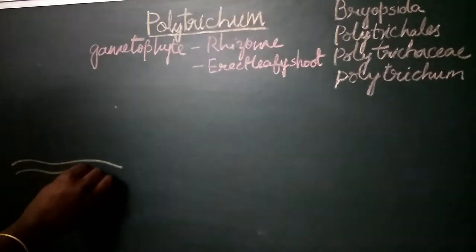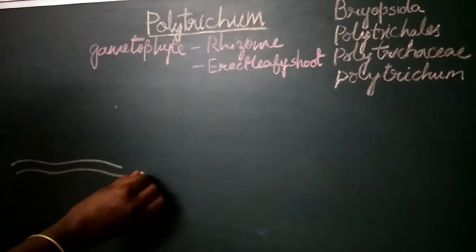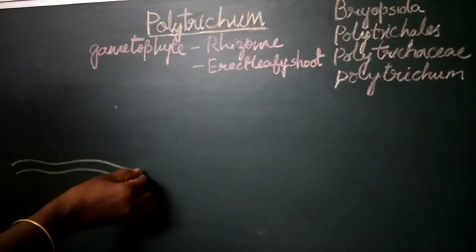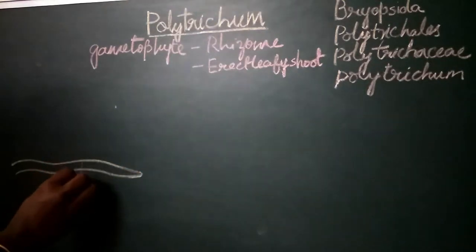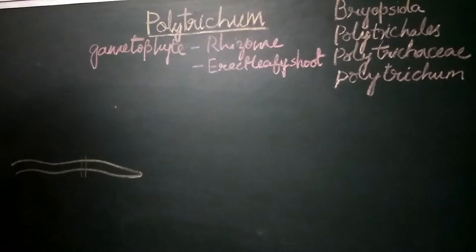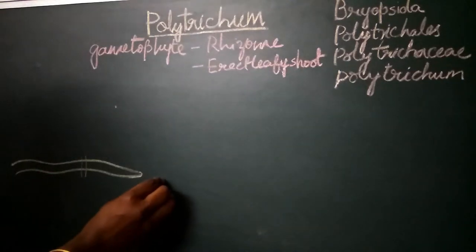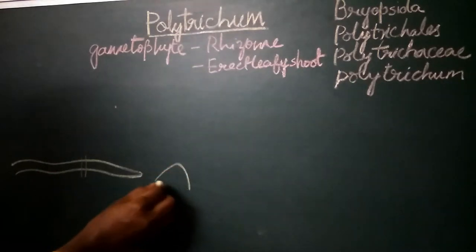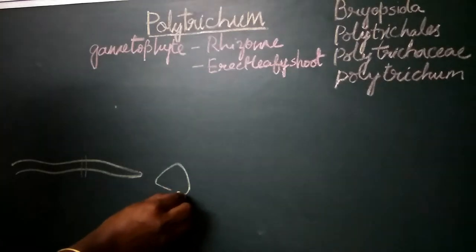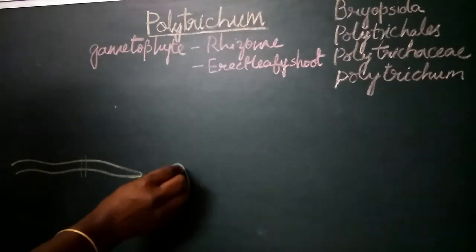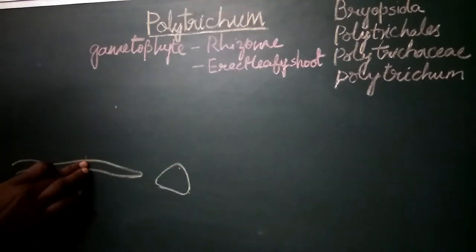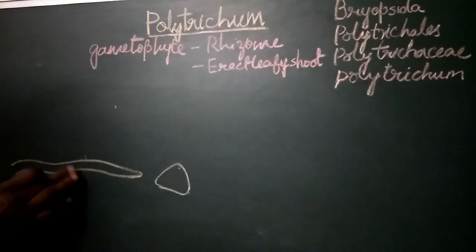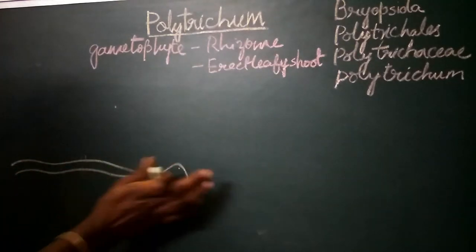The rhizome is roughly triangular in its outline. That is, when you take a transverse section of the rhizome, we find the rhizome is triangular in its shape with blunt corners — that is why we say it is roughly triangular in its outline.